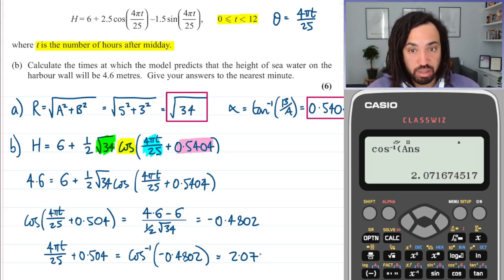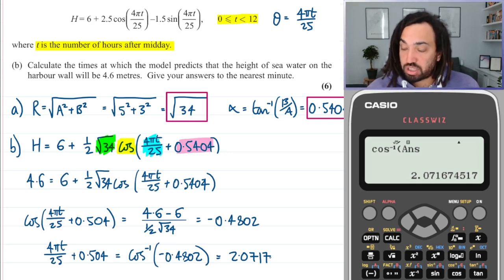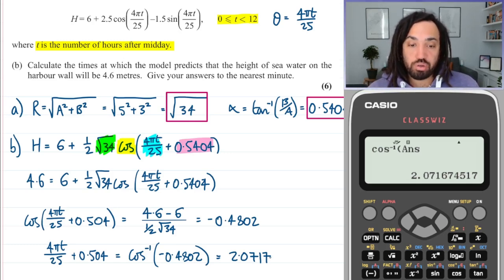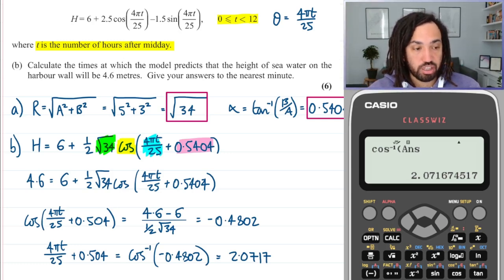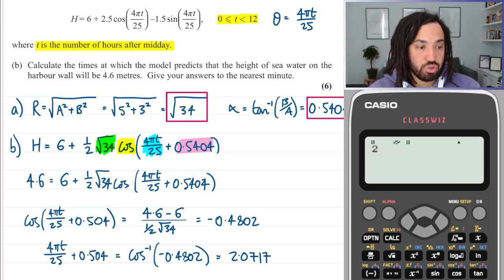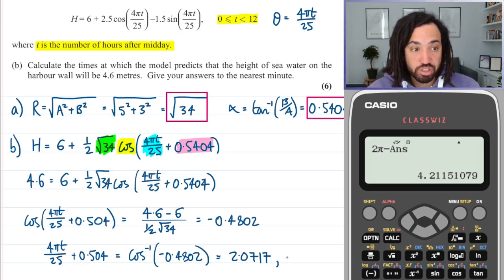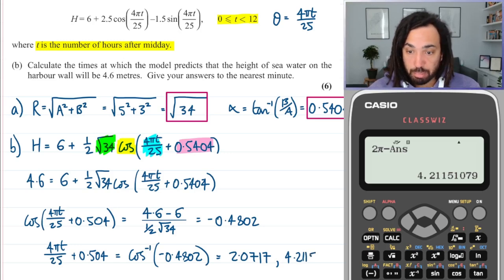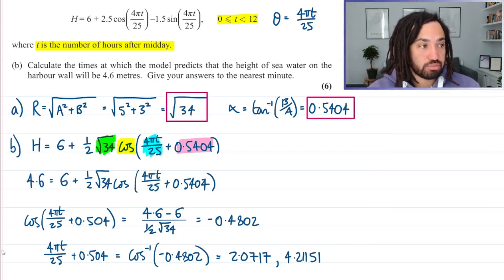We get our first solution for 4πt over 25 plus 0.5404, which is 2.0317. Critical: as soon as you do inverse cos or inverse tan or inverse sine on your calculator, I implore you to then go and find the second solution before you do anything else. The second solution for cos in radians is 2π minus the first answer, and we get 4.2151. Perhaps we may even need another answer.